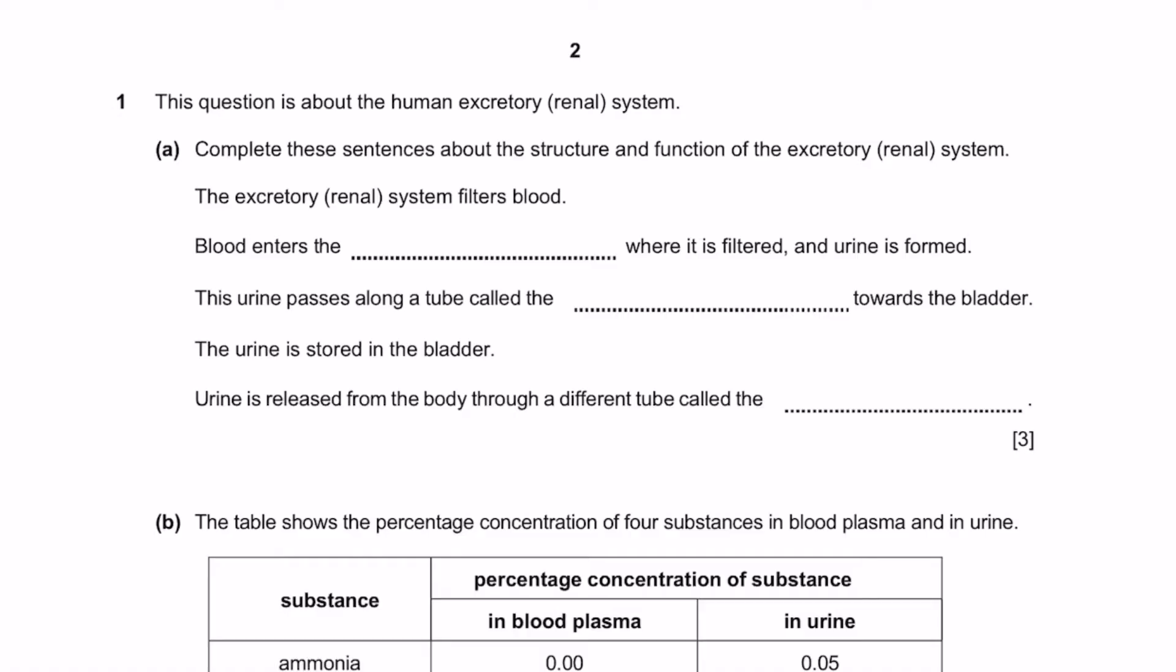Question 1. This question is about the human excretory or renal system. Part A: Complete these sentences about the structure and function of the excretory or renal system. The excretory system filters blood. Blood enters the dash where it is filtered and urine is formed. This is the kidneys. This urine passes along a tube called a dash, the ureters, towards the bladder. Straightforward fill in the blanks, that's our answer.